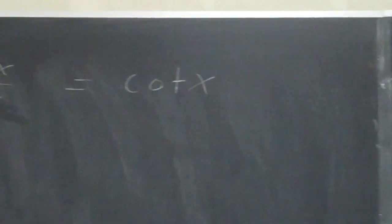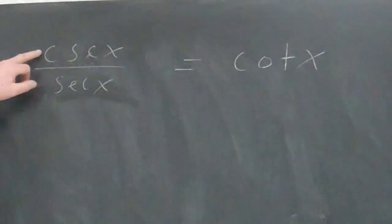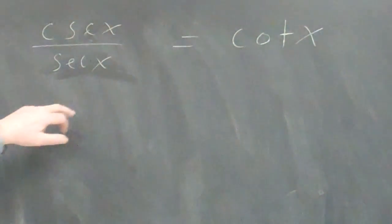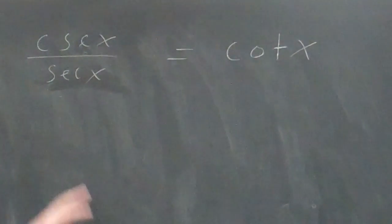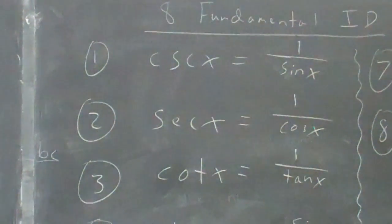Okay, we're going to prove that cosecant x over secant x equals cotangent x. This is a brand new identity, and we're going to show that it's true using algebra and our eight fundamental identities.